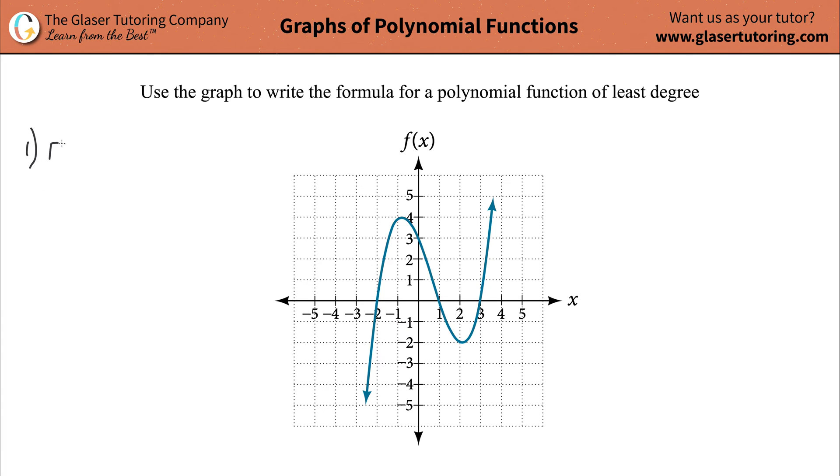One thing is going to be the end behavior of the function. What I mean by end behavior is what in the world is the graph doing as we go on and on and on forever on the left hand side and on and on and on forever on the right hand side. Whenever you have a graph going on and on downward in quadrant three, remember this is quadrant one, this is quadrant two, this is quadrant three and that's quadrant four.